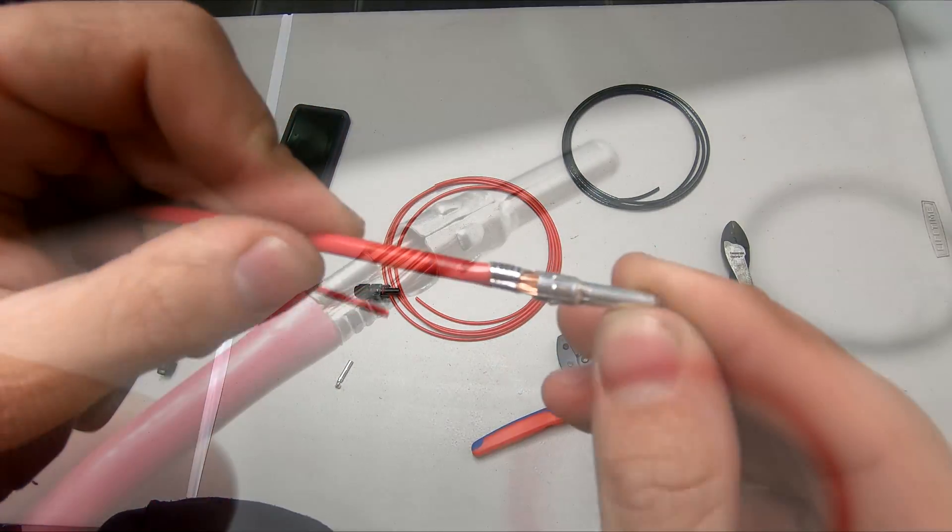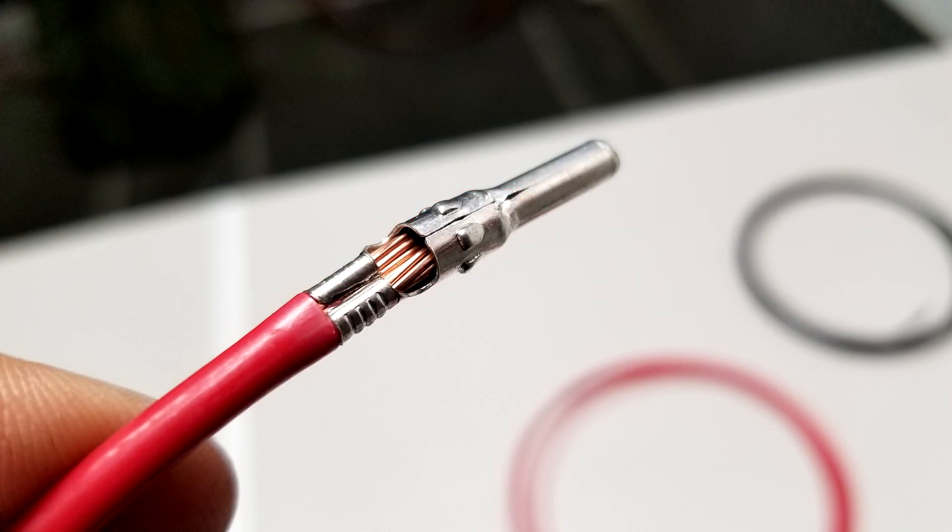Your crimp should look like this and here is a nice close-up shot of what this should look like.